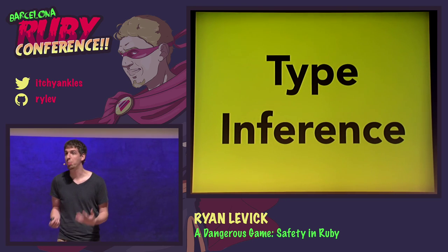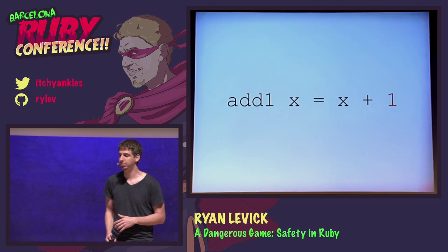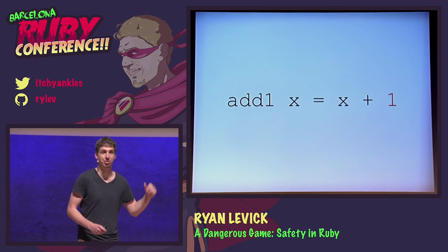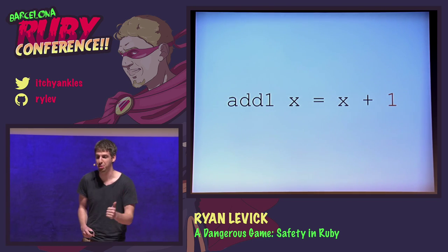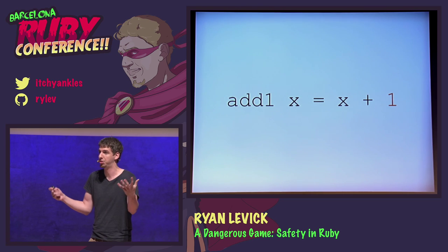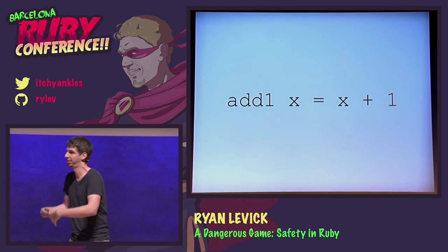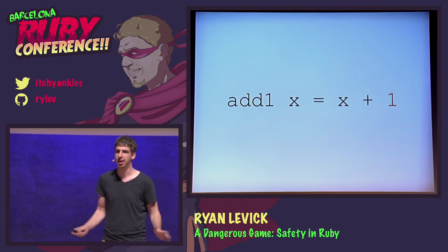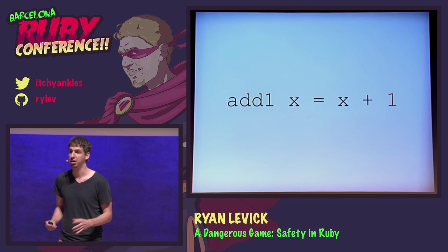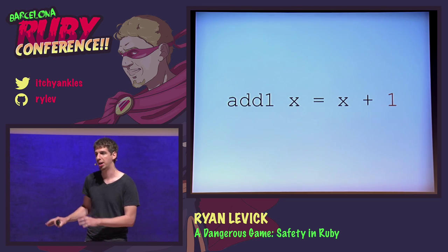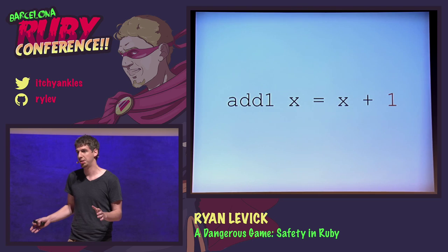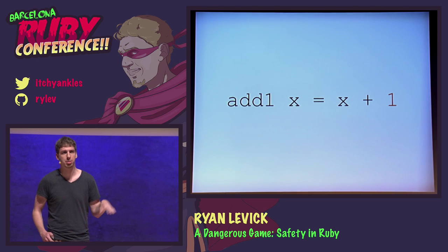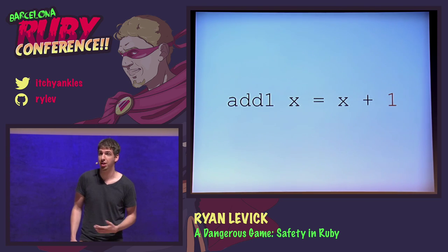We have something called type inference that helps us with this. Does anybody have any idea what language this is? This is Haskell, and this is fully statically checked. It will determine that x is some number and check that before you run your code. So we know we can't end up with those nasty errors. Because right before we even run the code, a compiler tells us we screwed up. And we don't have to annotate it with ugly int declarations everywhere — the computer does that for us because we're lazy.